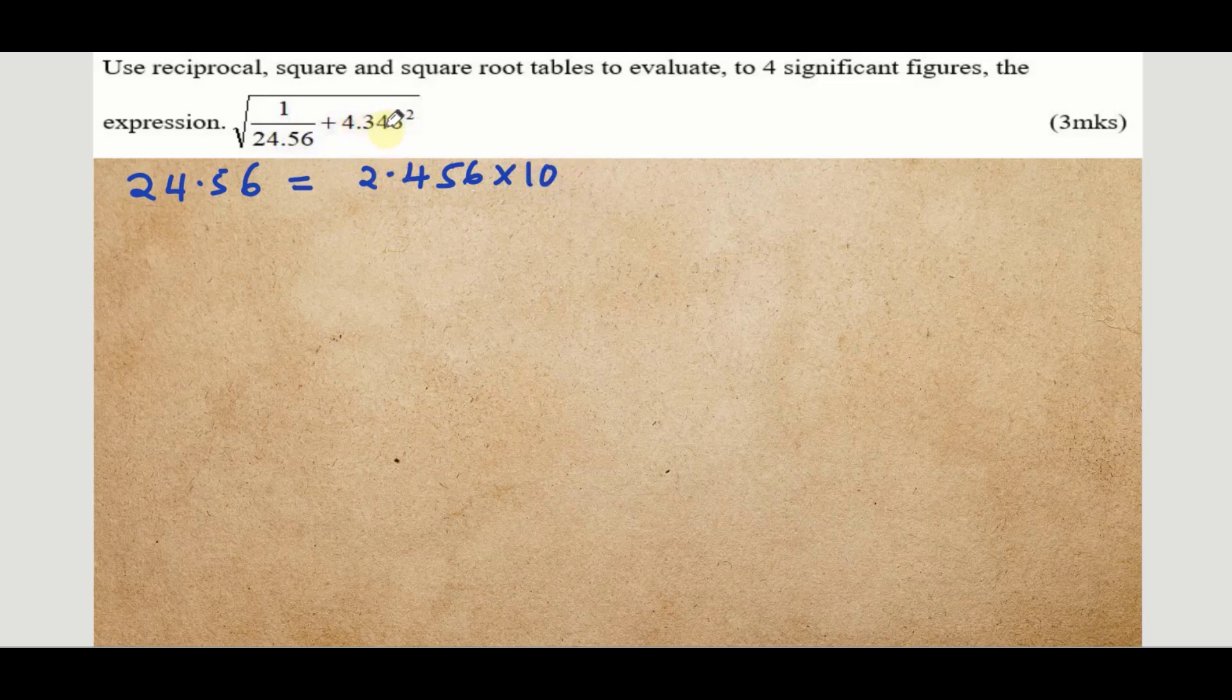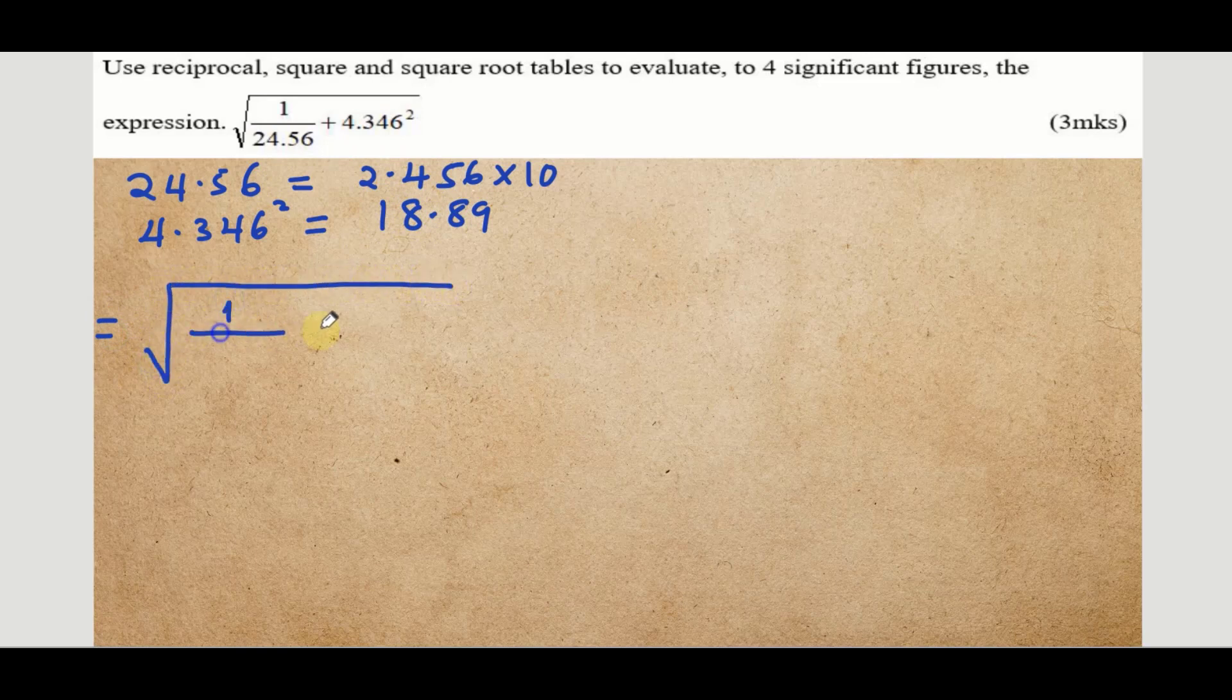We can use the tables of squares to get the square of 4.346, which will give correct to 4 significant figures 18.89. Now the next step will be to insert these values in our expression, so we have 1 divided by 2.456 times 10, add 18.89.